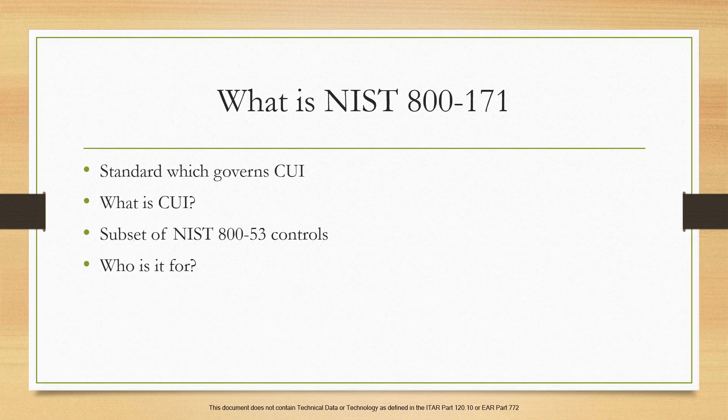So what is NIST 800-171? This is a standard from the National Institute of Standards and Technology, also referred to as NIST, all about protecting controlled unclassified information in non-federal systems and organizations. It's really all about implementing security controls to protect CUI — controlled unclassified information. This is information that is created or owned by the government that requires safeguarding or dissemination controls consistent with applicable laws, regulations, and government policy. It's important to call out that this information is not classified — it's not like corporate intellectual property unless it's created for or included in requirements related to a specific government contract.